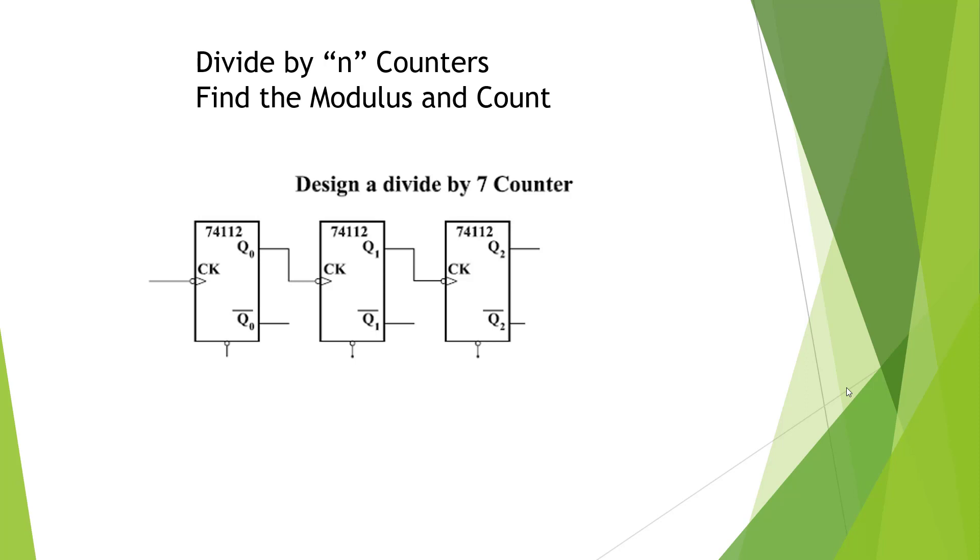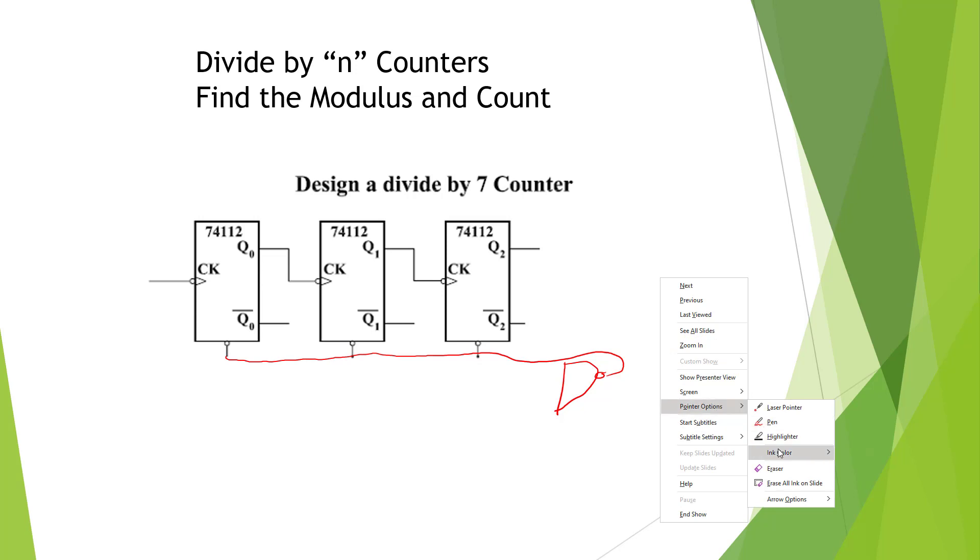Here they're asking us to design a divide by 7 counter. So first thing we need to do is put in a NAND gate. And we're going to feed it back. So the first thing we're going to do is, let's go ahead and take this one up here, because 7 is 1, 1, 1.